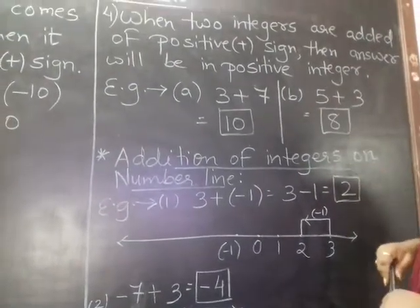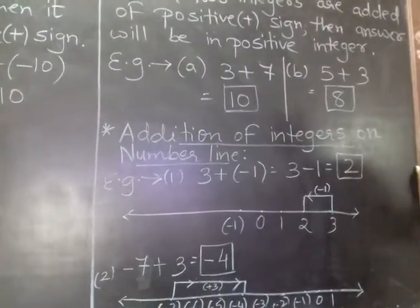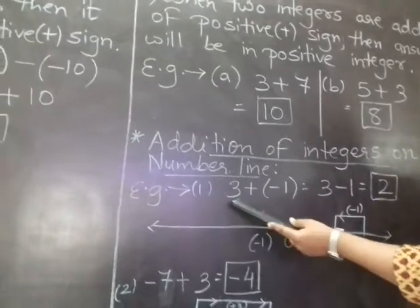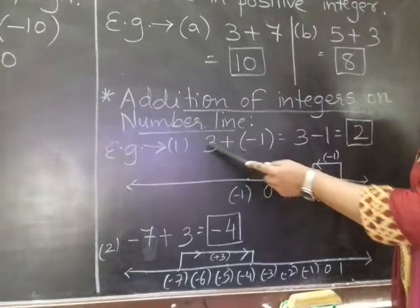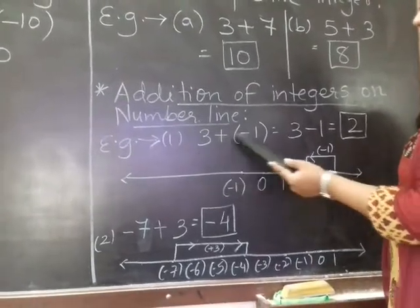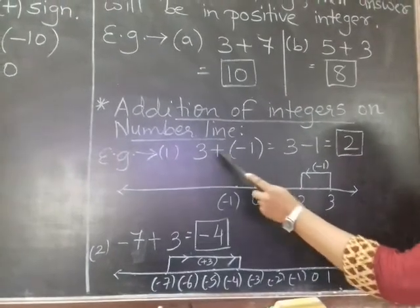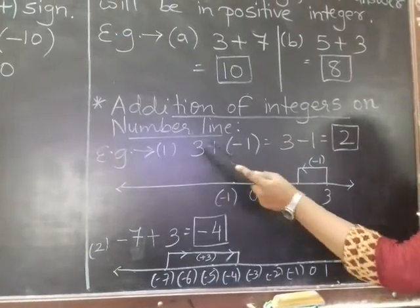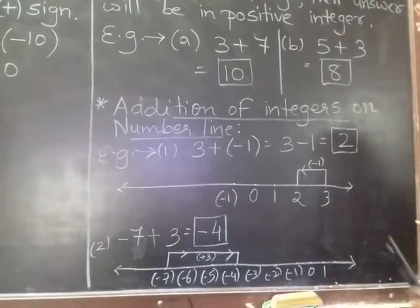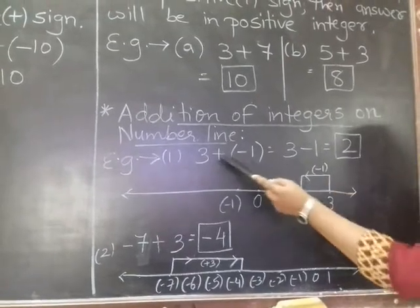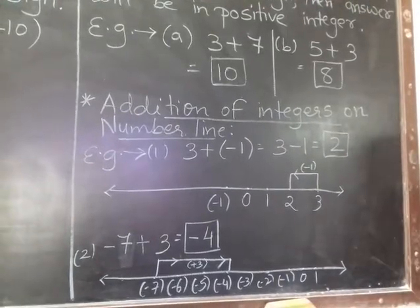From all these rules, I move on to the new topic: addition of integers on a number line. Check the two examples. Here 3 is positive and in between we have plus — but since plus and minus come together, the plus is removed and the minus takes its place. So we get 3 minus 1, which equals 2.